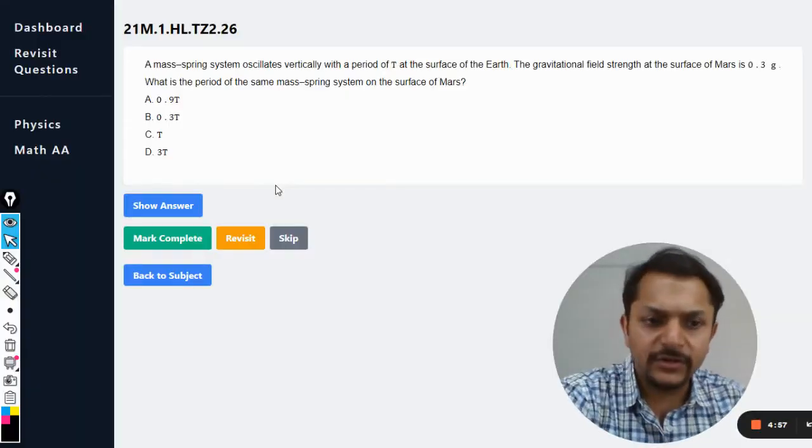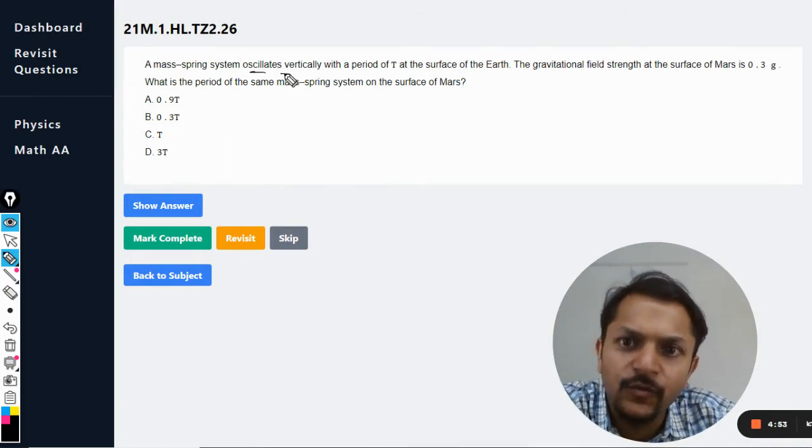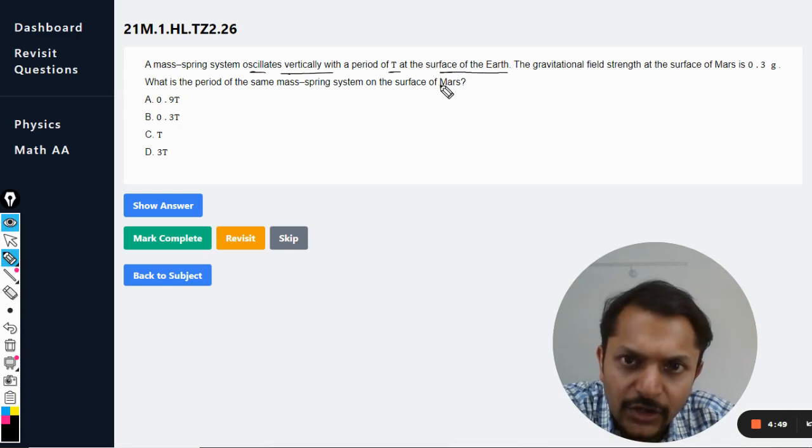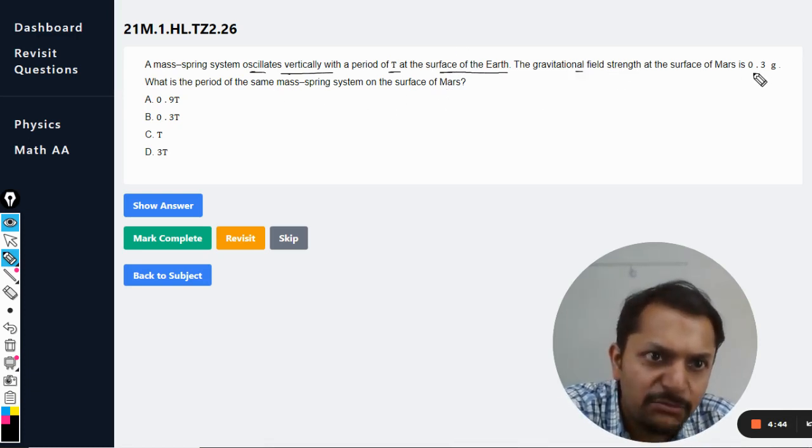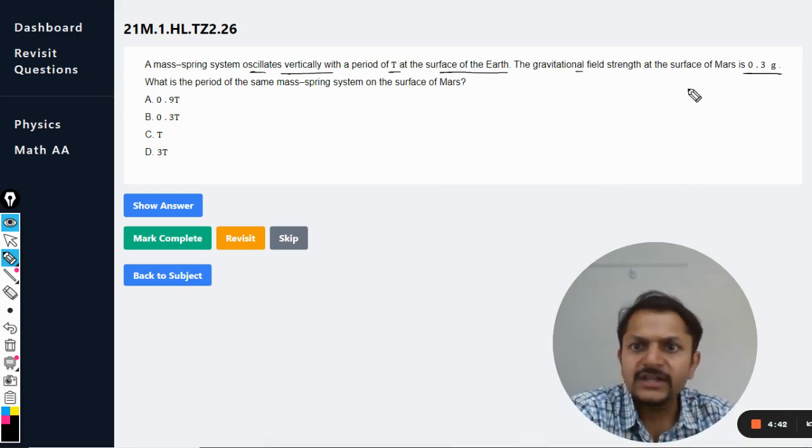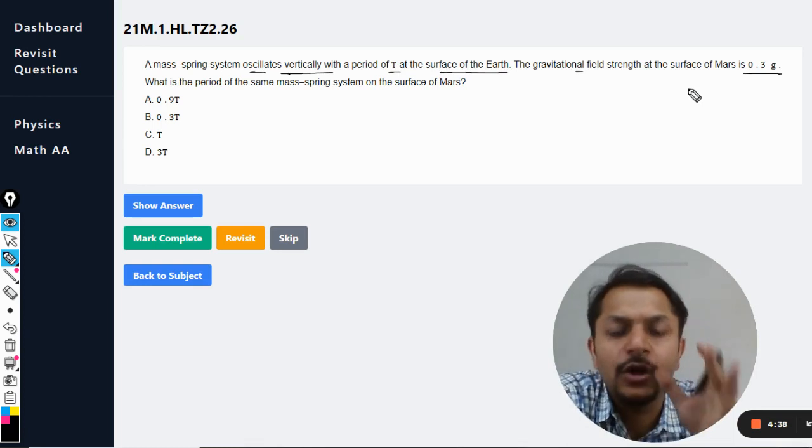Okay, dear students, let us see what is there in this question. A mass-spring system oscillates vertically with a time period of t at the surface of the Earth. The gravitational field strength at Mars is 0.3g. What is the period of the same mass-spring system on the surface of Mars?